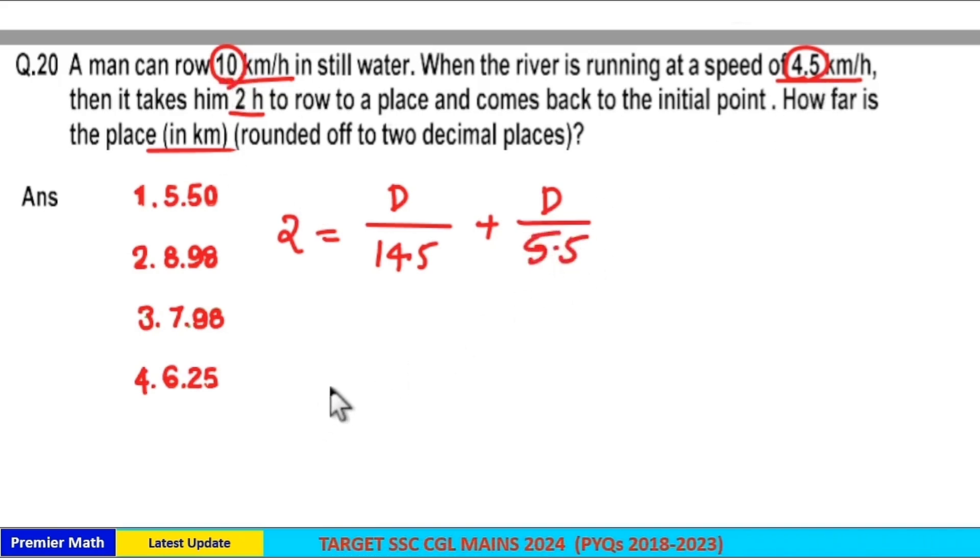Now 5.5d plus 14.5d is 20d divided by 14.5 into 5.5. 14 into 5 is 70, 14 into 0.5 is 7, so 77 plus 0.5 into 5 is 2.5, 0.5 into 0.5 is 0.25. So 2.5 plus 0.25 is equal to 2.75, which is equal to 2.